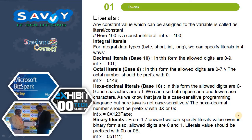The next topic is literals. Any constant value which can be assigned to a variable is called a literal, also known as a constant. For integral data types — byte, short, long, and int — you can specify literals in 4 ways. First, decimal literals (base 10): the allowed digits are 0 to 9, for example int x = 101. Second, octal literals (base 8): the allowed digits are 0 to 7, and the octal number should be prefixed with 0.